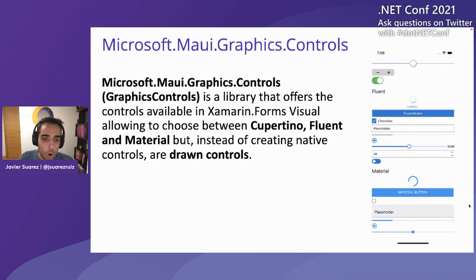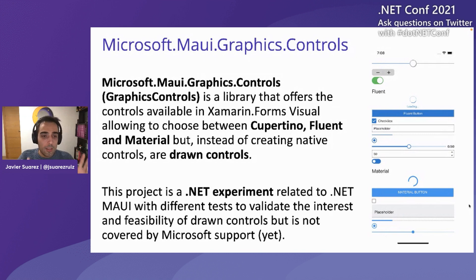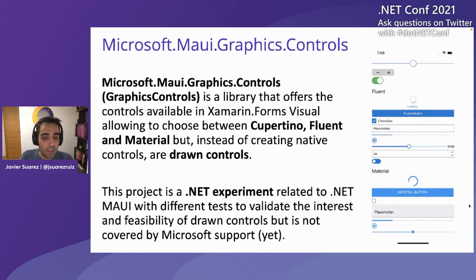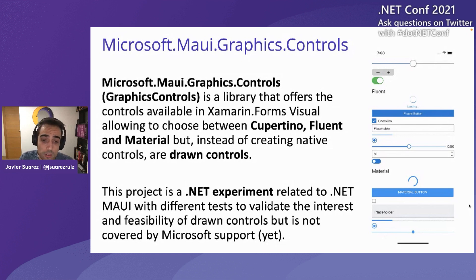Microsoft.Maui.GraphicsControls is another library exposing a subset of controls. But instead of creating a native control, it draws all the controls. It allows you to choose between Cupertino, Fluent, and Material Design. For now, this library is available as a .NET 6 library and is available via NuGet package from a nightly feed where you can get it and use it with .NET MAUI previews today.